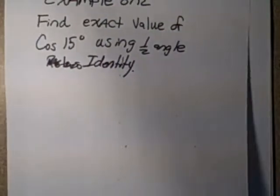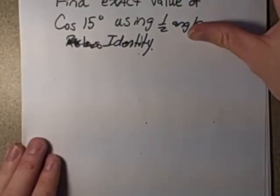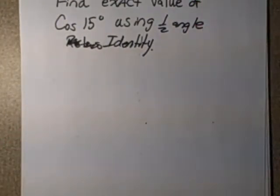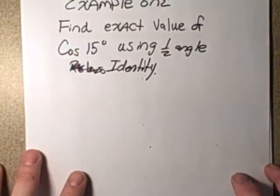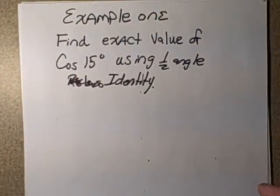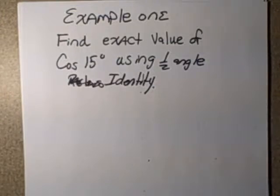So let's take a look at our first example then. And that's just quick using exact values and special triangles. What is the exact value of cos 15 using the half angle identity?